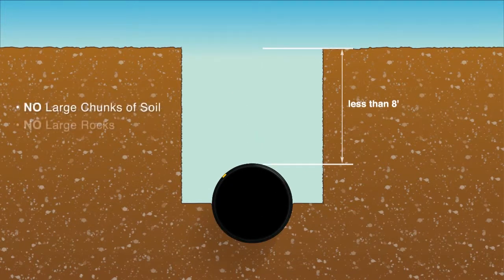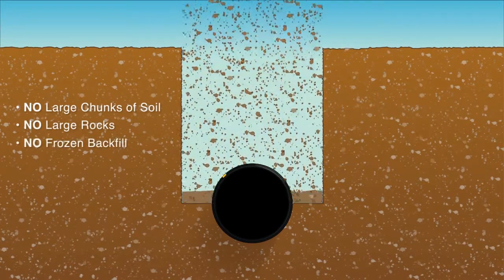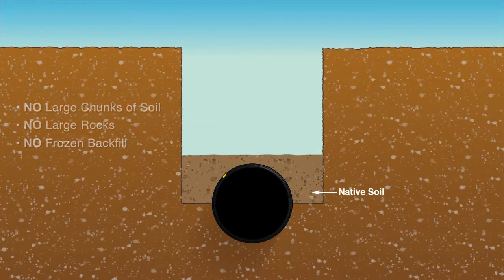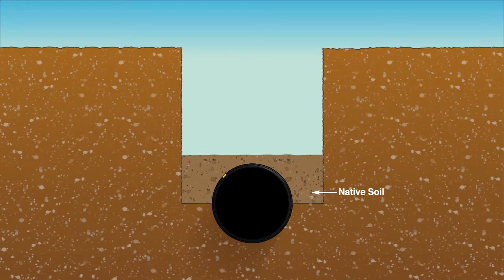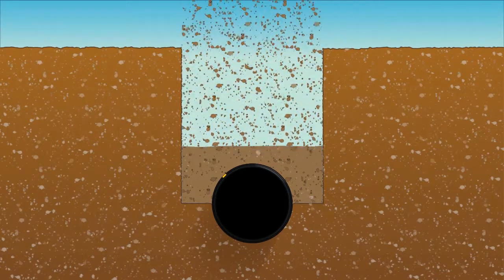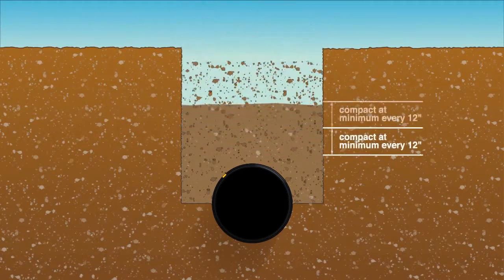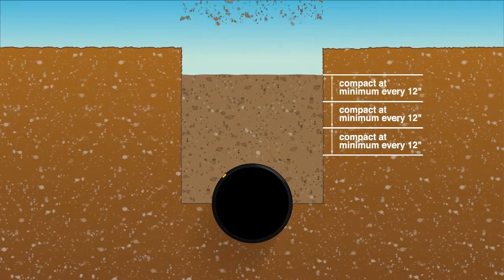No large chunks of soil, large rocks, or frozen backfill should be used. Cover the area around the pipe with compacted native soil to 6 inches above the crown of the pipe. Make sure the backfill is worked along the pipe and down the sides to eliminate any voids. Fill the rest of the trench with native soil, compacting at minimum every 12 inches.